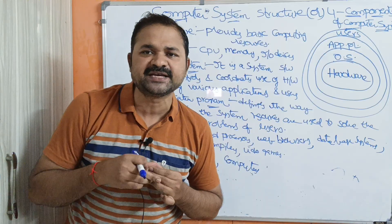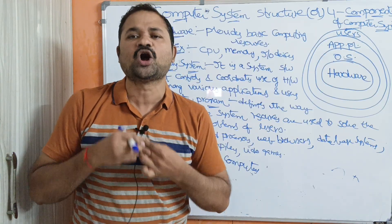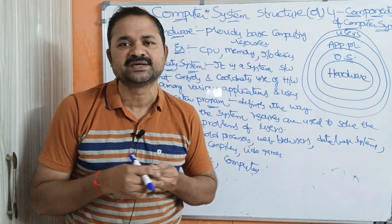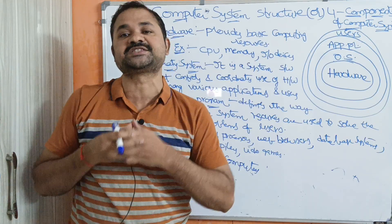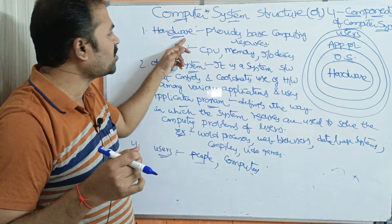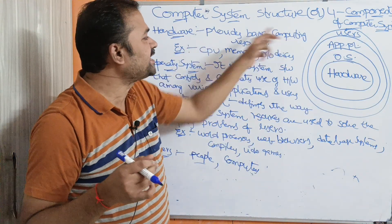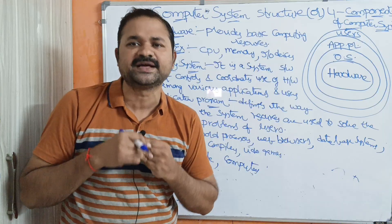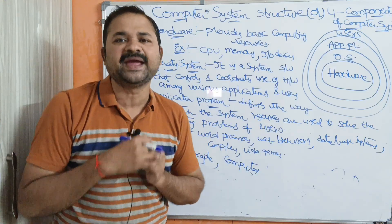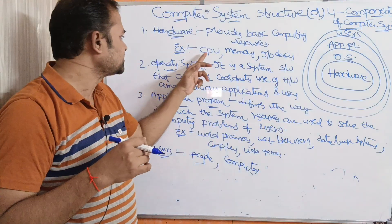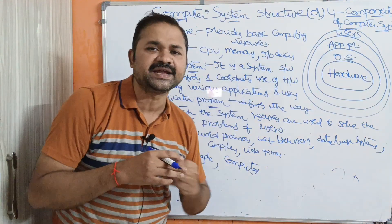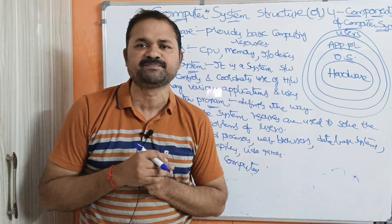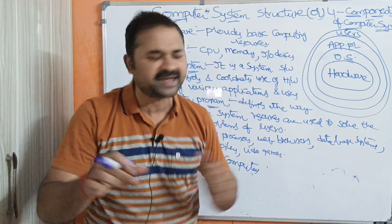First, let's see about hardware. We know what hardware is — the physical components present in the computer. In operating system terminology, hardware means the computing resources of the system. Hardware provides basic computing resources. Mainly we have three hardware devices: CPU, memory, and input/output devices.